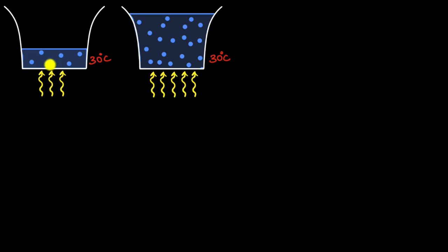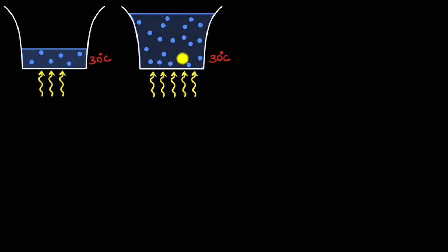When you supply heat energy, that heat gets distributed to all the molecules, and as a result the average energy increases. But over here you have so many more molecules. So if you want to increase the average energy here as well by the same amount, you've got to supply more energy, mainly because there are so many more molecules compared to over here. So because there is more stuff, it took more heat energy to raise the temperature.